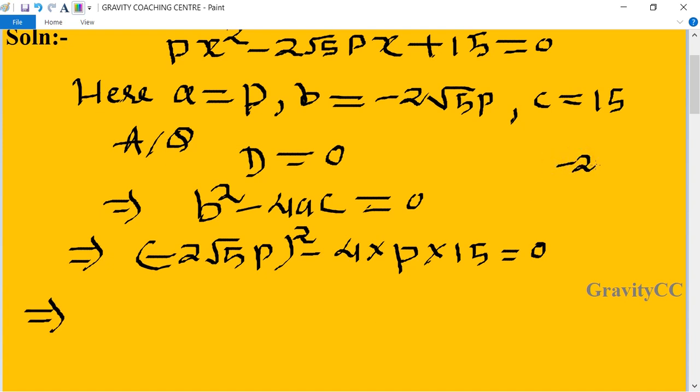-2√5 into -2√5: -2 times -2 equals 4, and √5 times √5 equals 5, so 4×5 = 20. So here 20p² - 60p = 0.